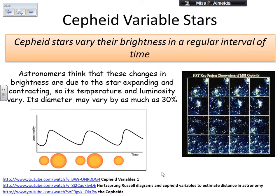They are very special stars because they vary their brightness in a regular interval of time. It's not because the star is dying that it suddenly varies in brightness, but they do it in a very specific interval of time and they keep doing that over the same period. We don't quite know why the brightness changes, but we believe it's because the star expands and contracts. When the star is smaller, the luminosity is not as high. As the star expands, the luminosity increases. As the star contracts, the luminosity decreases, and the whole cycle repeats itself in the same interval of time.